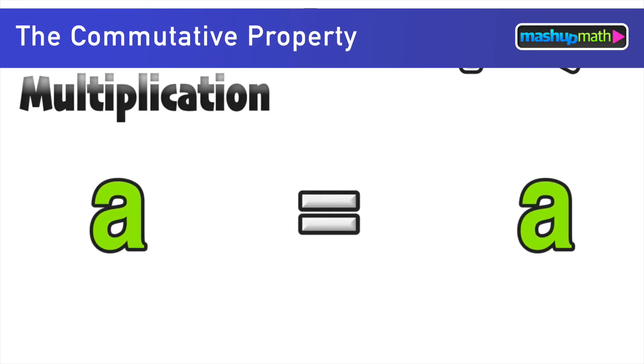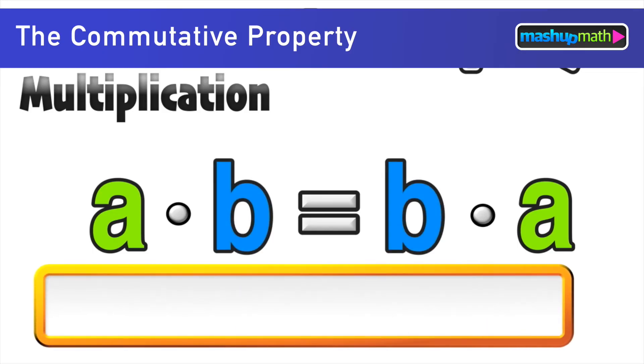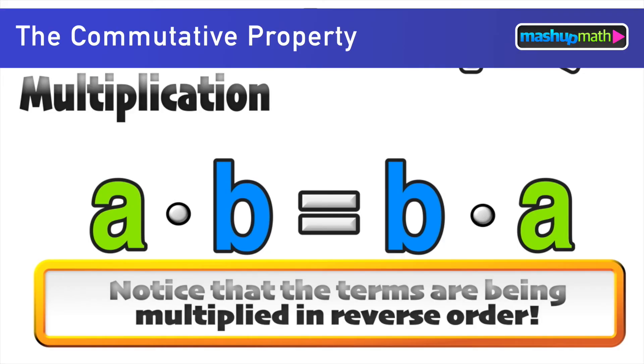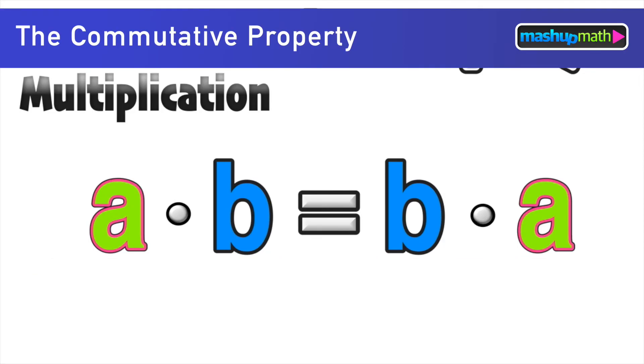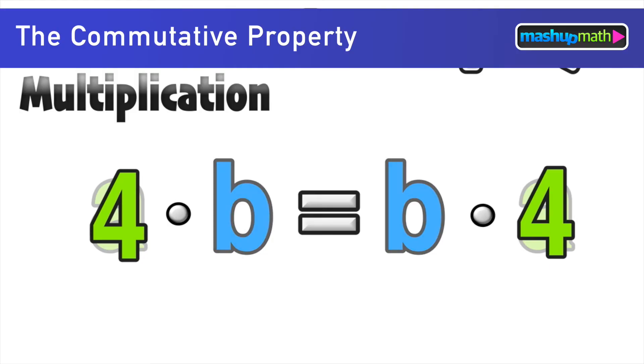Moving on to multiplication now, let's look at the definition: a times b is equal to b times a. Again, hopefully we're starting to notice the pattern or commutative property here that the terms are the same but the order is reversed. So in this case for this example we'll replace the a term with the number four and we'll replace the b term with the number eight.